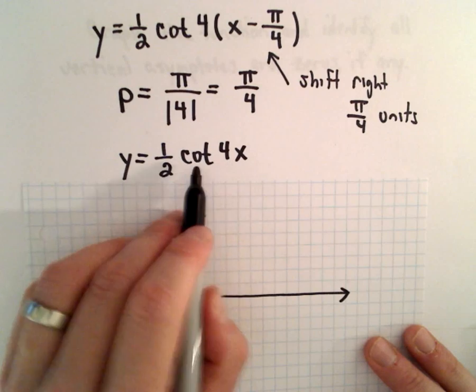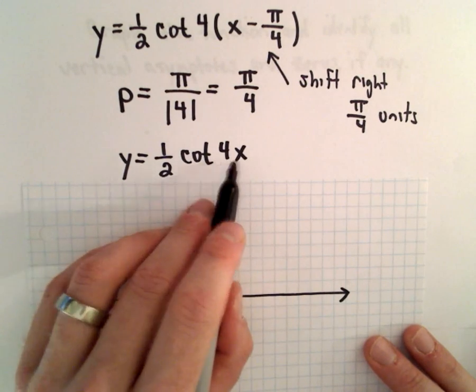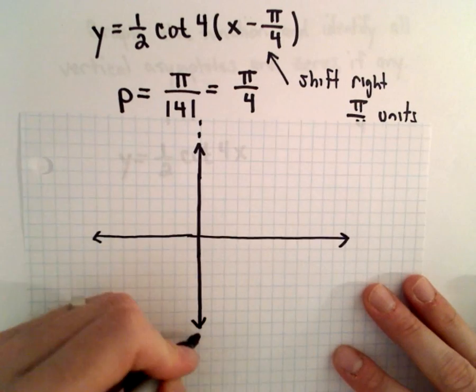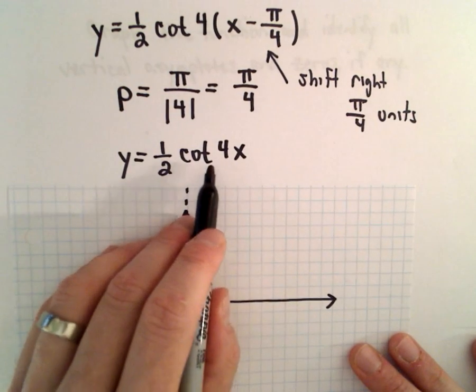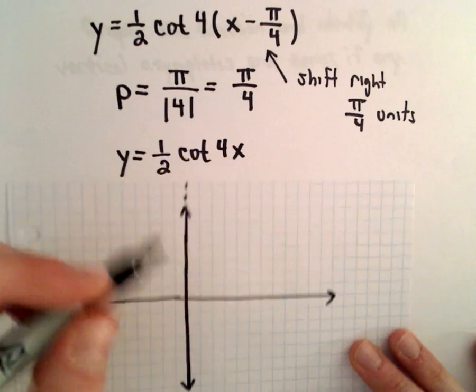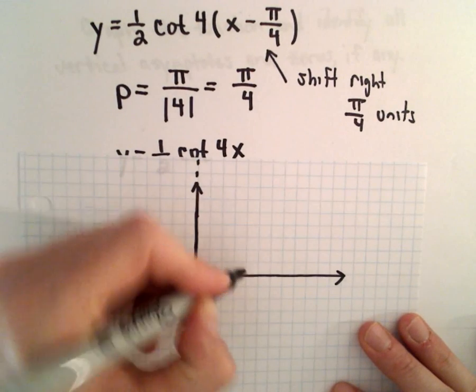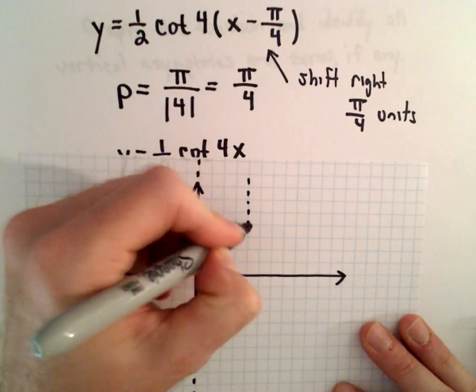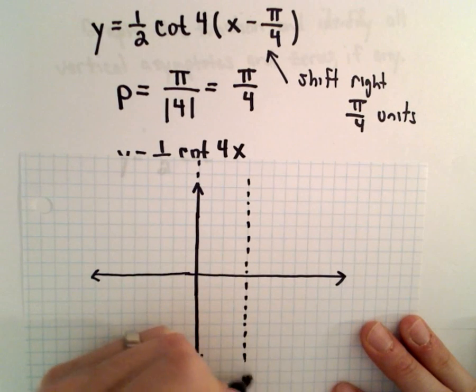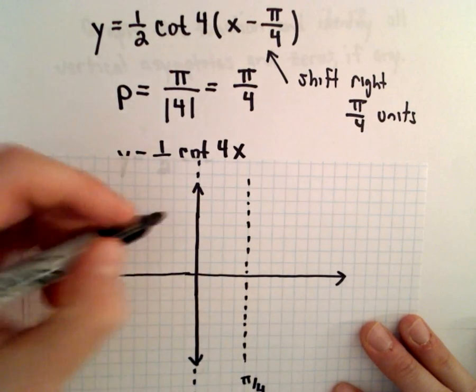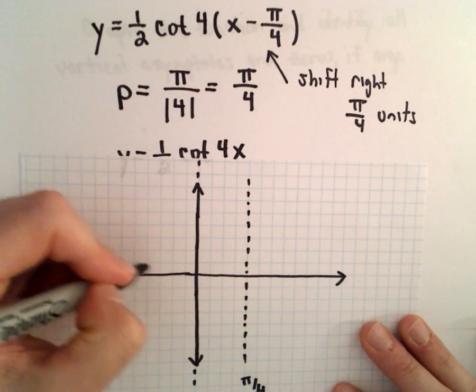So recall that x equals 0. Well, in this case, we'll get cotangent of 0, which is undefined. And that's where we have a vertical asymptote. Since the period is equal to pi over 4, our next vertical asymptote for cotangent will occur at pi over 4, and likewise at negative pi over 4.